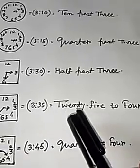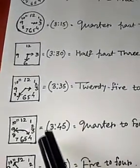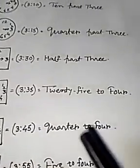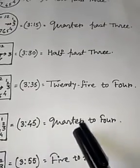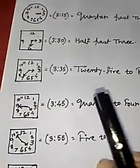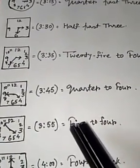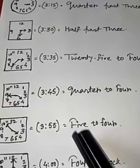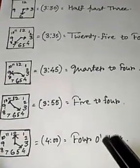Just like that, 3:45 means quarter to 4. That means there are 15 minutes left to be 4. That is why quarter to 4. Just like that, 3:55 means 5 minutes left to be 4, so 5 to 4. And this is 4, and this is 4 o'clock.